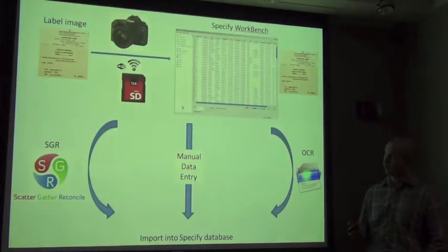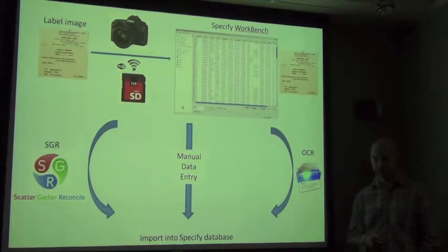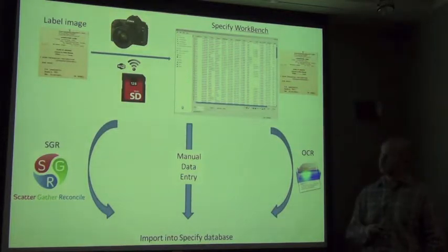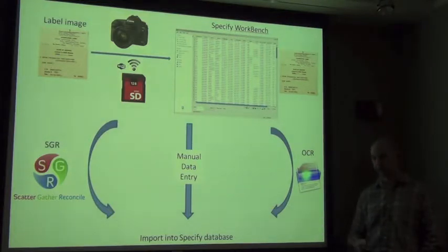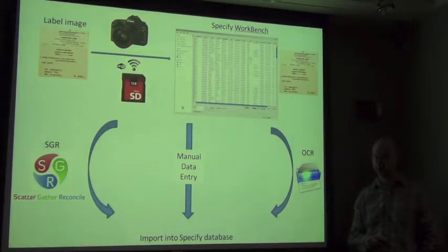One of the other workflows we are looking at is the ability to use new Wi-Fi enabled SD cards for a digital SLR camera, which will wirelessly interface with a laptop or PC. You would be able to take digital images of specimens and we would automate the process of creating rows in the workbench, attaching those images to individual rows — for instance, images of herbarium labels attached to each row for data entry.